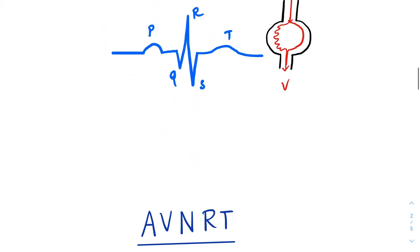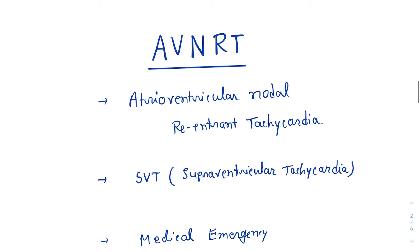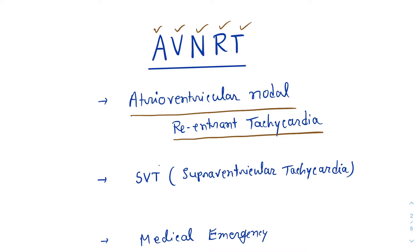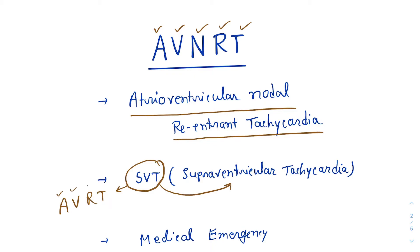AVNRT stands for Atrioventricular Nodal Reentrant Tachycardia. This is one of the subtypes of SVT — SVT stands for Supraventricular Tachycardia, meaning tachycardia originating from above the level of the ventricles. SVT has one more subtype, that is AVRT, which stands for Atrioventricular Reentrant Tachycardia.